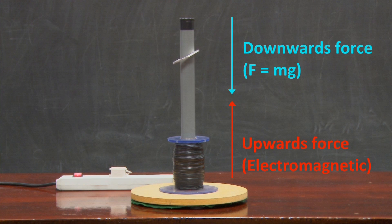In this case, the ring hovers at an equilibrium point where the downwards force due to its mass is balanced by the upwards electromagnetic force.